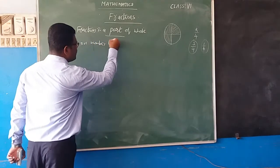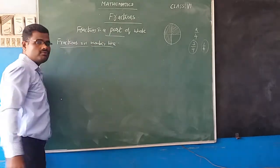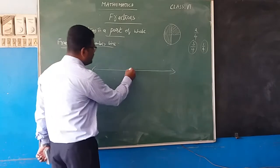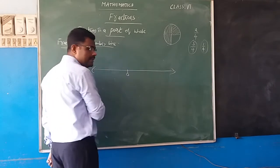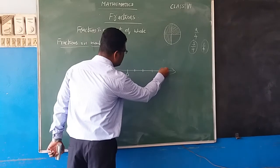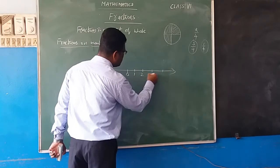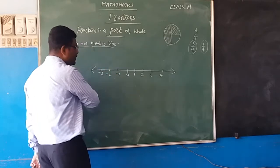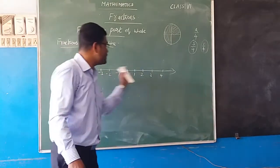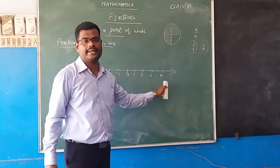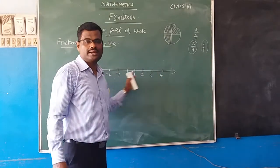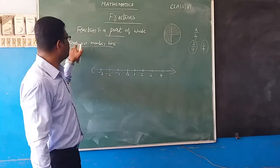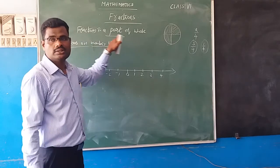What is the meaning of a number line? It is the representation of numbers on a line. Suppose this is a line. At the center is 0. Going right, each point indicates plus 1, plus 2, plus 3, plus 4. Going left indicates minus 1, minus 2, minus 3. This is called the number line — the representation of integers on a line.